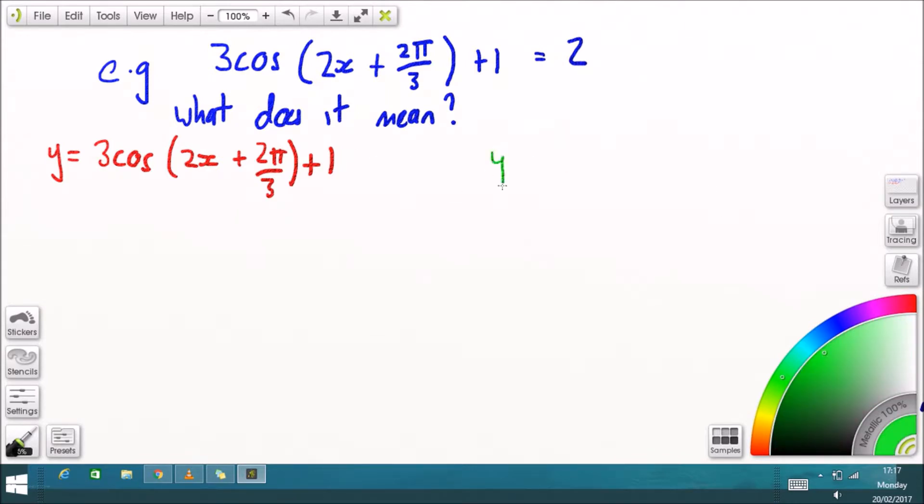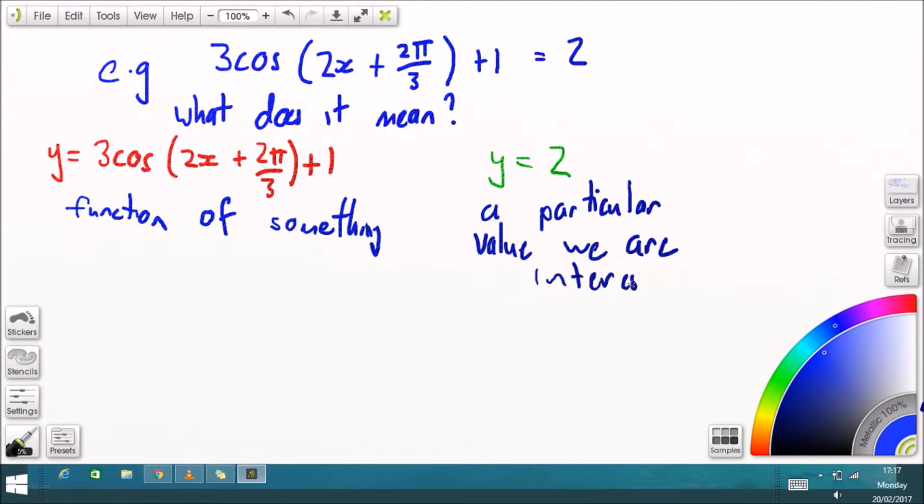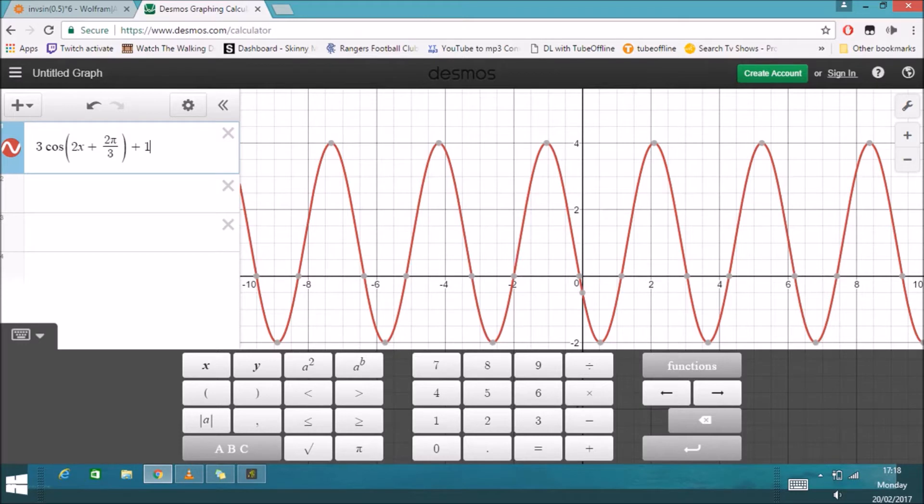Over time, anything. We want to know when is that at a particular value. So when is the height of the tide two meters above? We've got a function of something represented by our trig function, and we'll look at how we model those later. And we've got a particular value that we're interested in. We want to know when does our thing that we're modeling equal a particular value, when does the tide equal two meters?